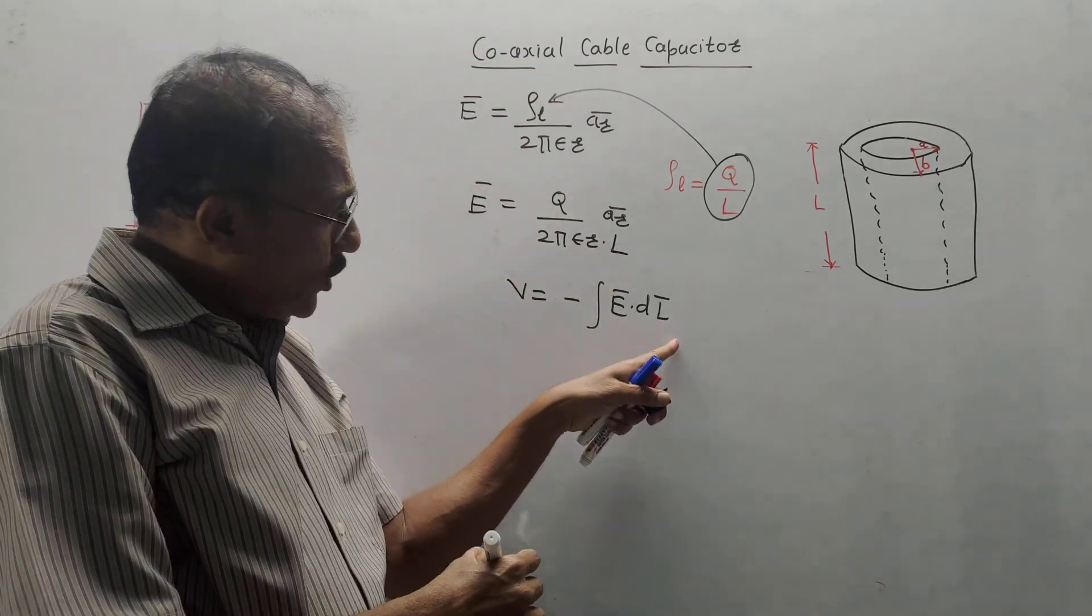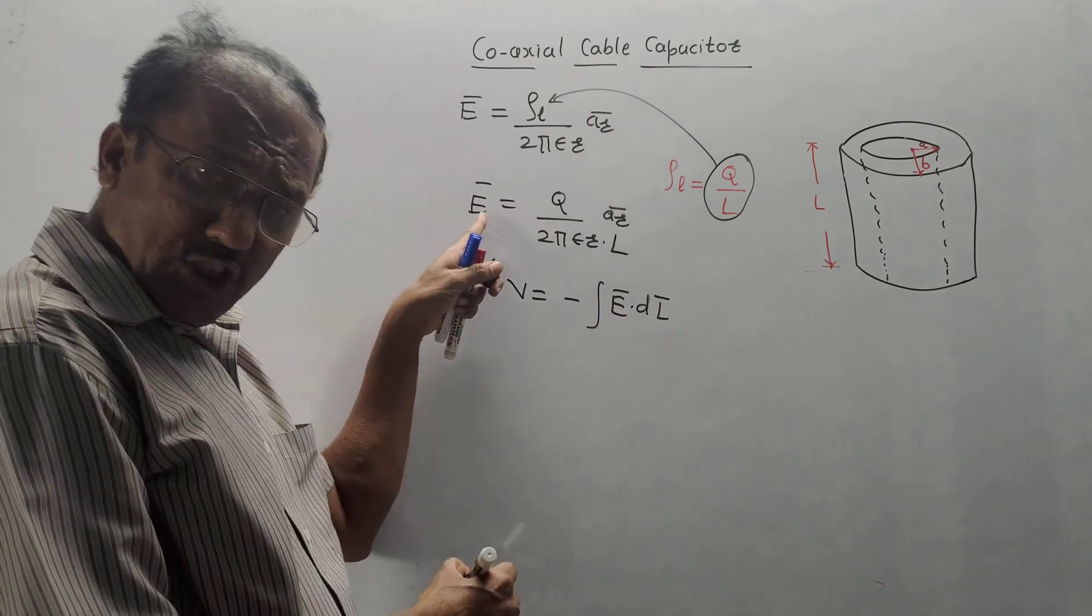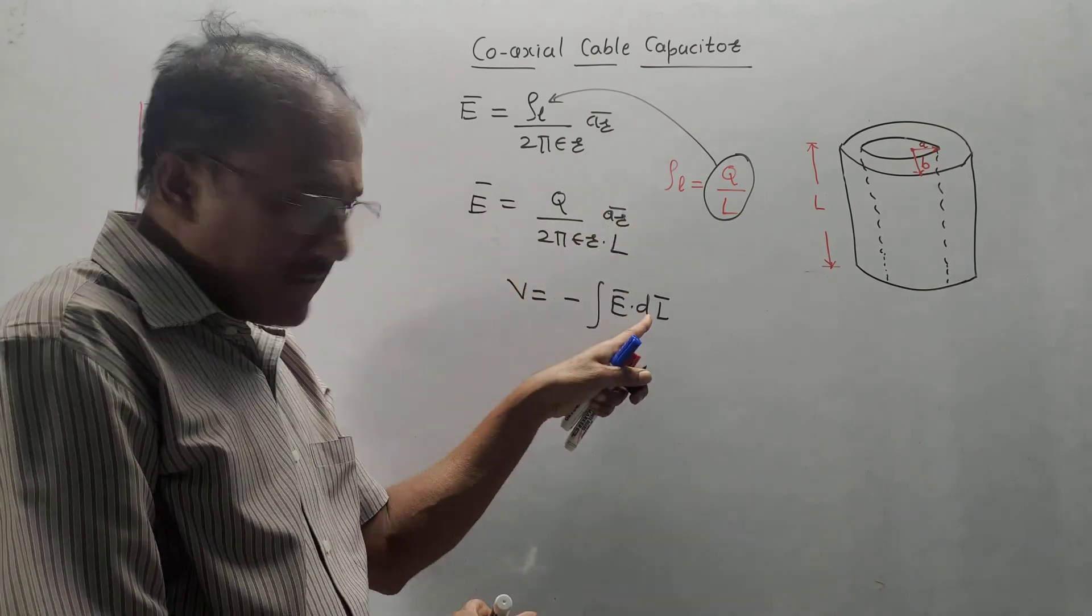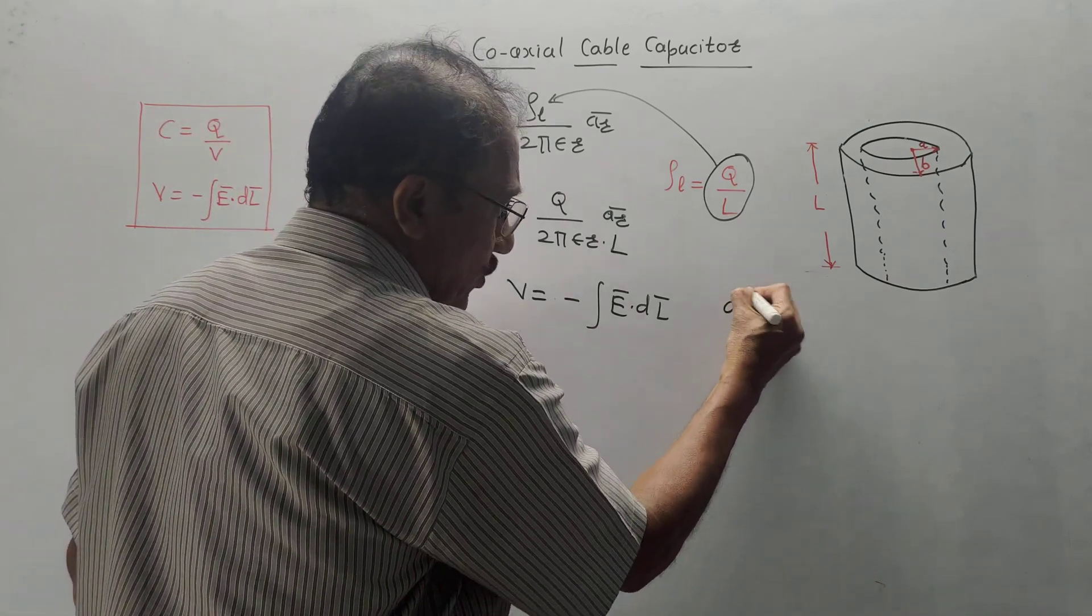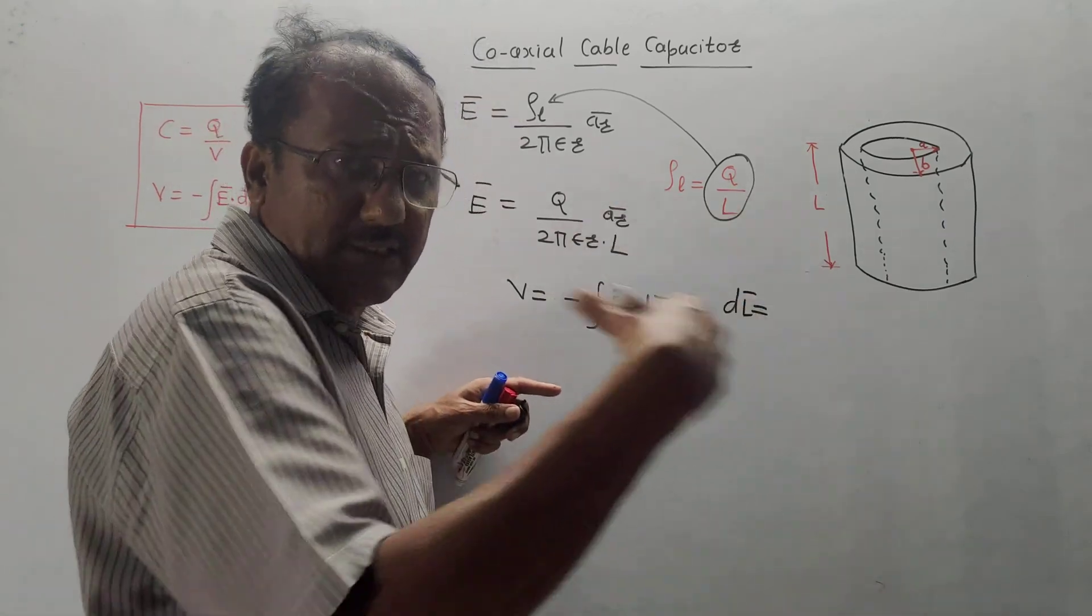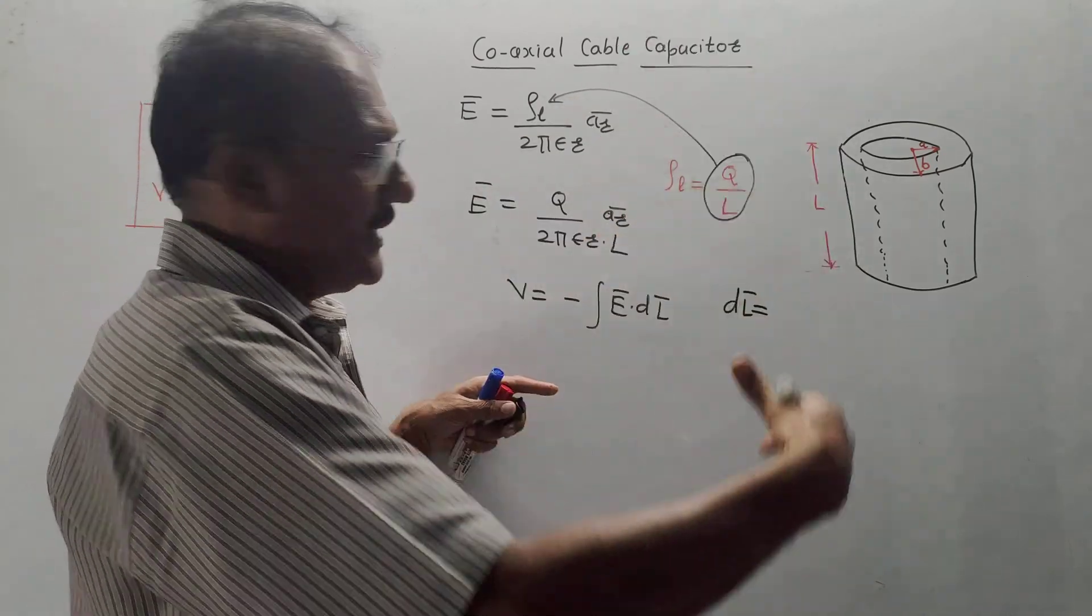Now, this is the dot product. Direction of e bar is AR bar. Direction of D L bar must be AR bar. You don't have to use or memorize the equations related to coordinate system. I am telling you simple trick.